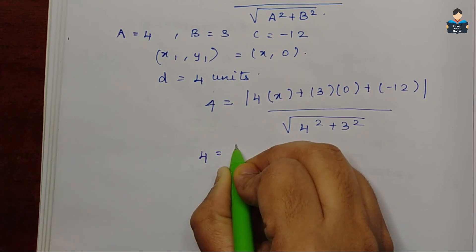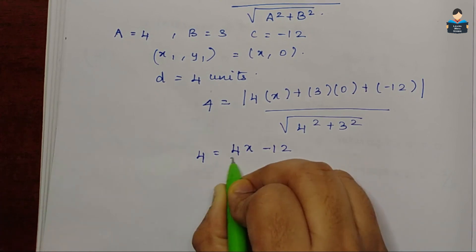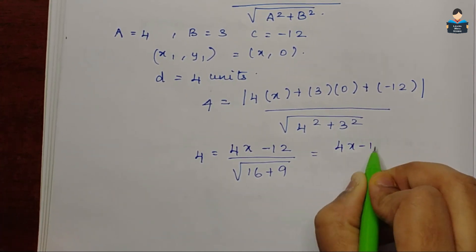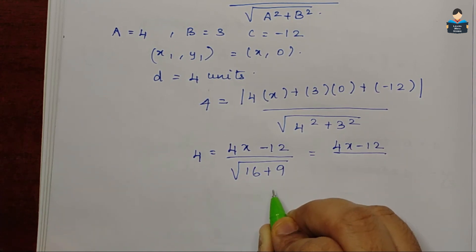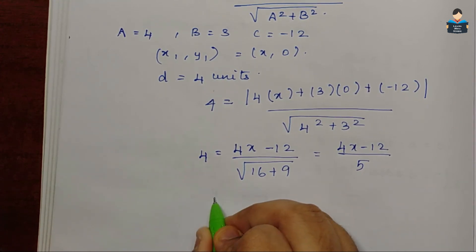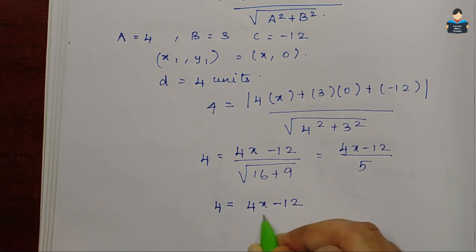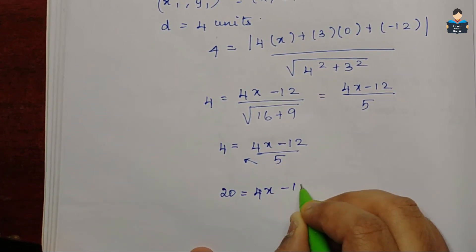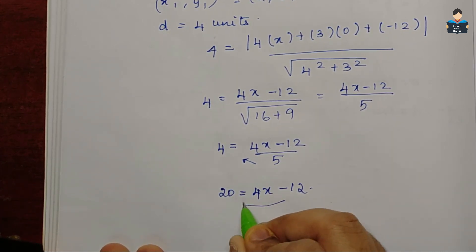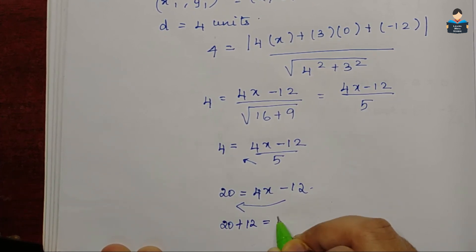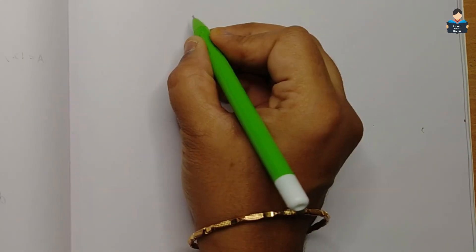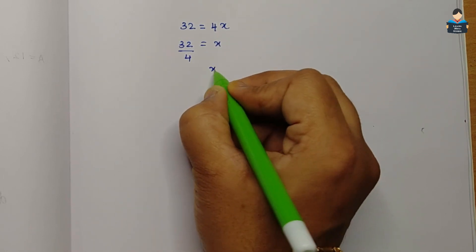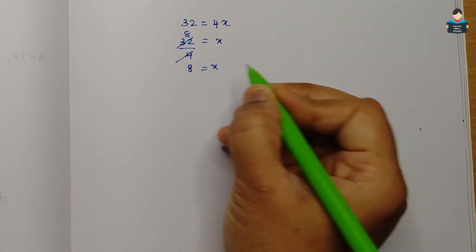So, 4 is equal to modulus of 4x, 3 into 0 is 0 வந்து, minus 12, by square root of 16 plus 9. So, அப்ட 4x minus 12 by 16 plus 9, and 25 square root of 25 is 5. So, 4 equal to modulus of 4x minus 12 by 5. Cross multiply பண்ணி எடுத்திட்டோம், 4 fives are 20, equal to 4x minus 12. So, constant terms: minus 12 பக்கம் வராமோட, 20 plus 12 is equal to 4x, வரும். 32 equal to 4x. So, x is equal to 32 by 4, and x is equal to 8. x value 8.